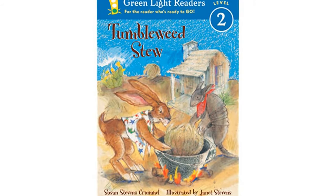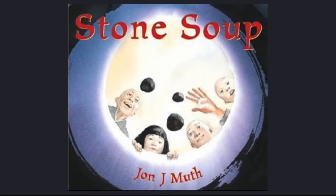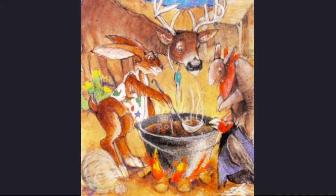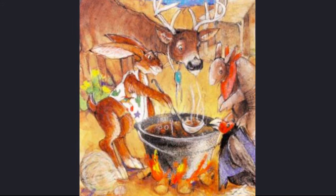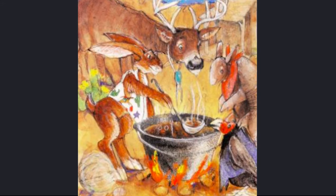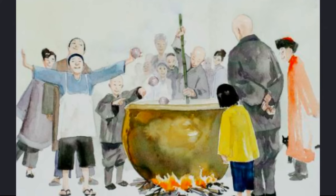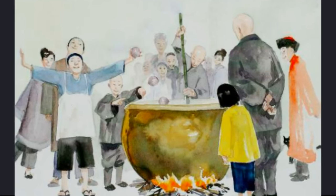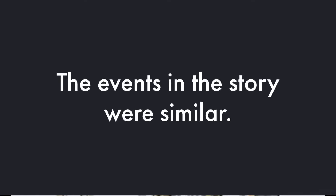That's exactly what happened to me when I read Tumbleweed Stew. I made a text-to-text connection to the book Stone Soup. In the book Tumbleweed Stew, the only thing Jackrabbit has to make the stew is the tumbleweed. But then all the other animals, when they taste the stew, decide that they have other vegetables they can add to make the stew better. The same thing happens in Stone Soup — the monks who start the soup only have stones, but then all the other villagers bring vegetables to make the soup delicious. I made a text-to-text connection because the events in the story were similar.